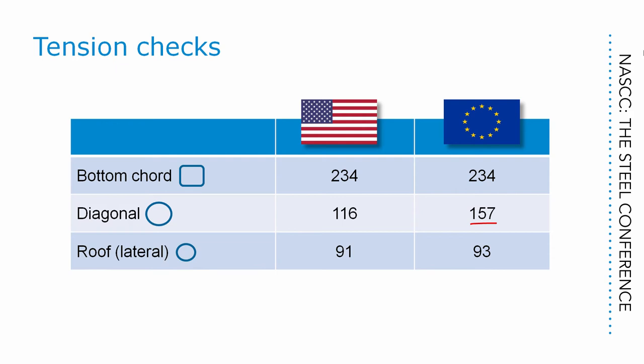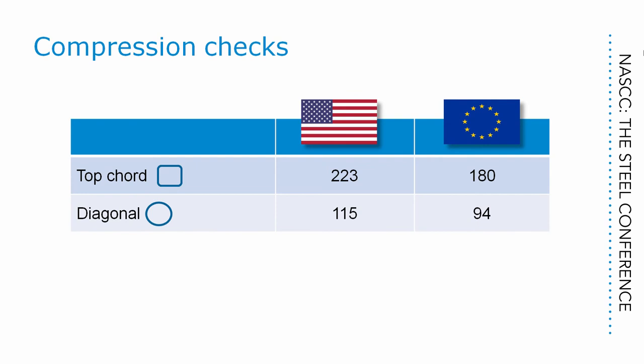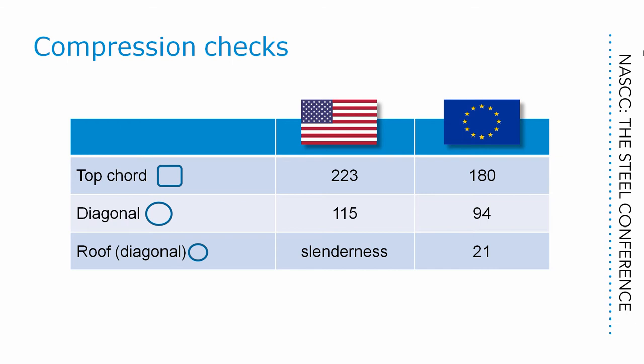Compression checks we've already talked about at length — the smaller values from the Eurocode, despite the apparently more refined calculation approach. And the roof members, which are not allowed under AASHTO rules due to considerations of slenderness.